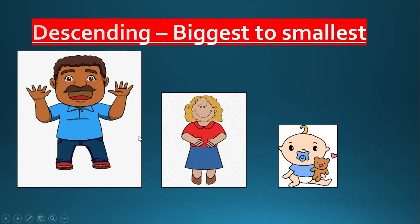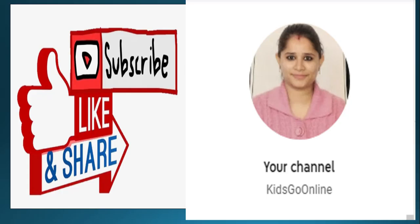So we have learned descending order in this class. Descending means biggest to smallest. We can see in the picture: father is the biggest in the family, then mother, and then the baby — biggest to smallest. I hope you understand the concept of descending order. Don't forget to like, share, and subscribe to my channel. Kids Go Online. Thank you!